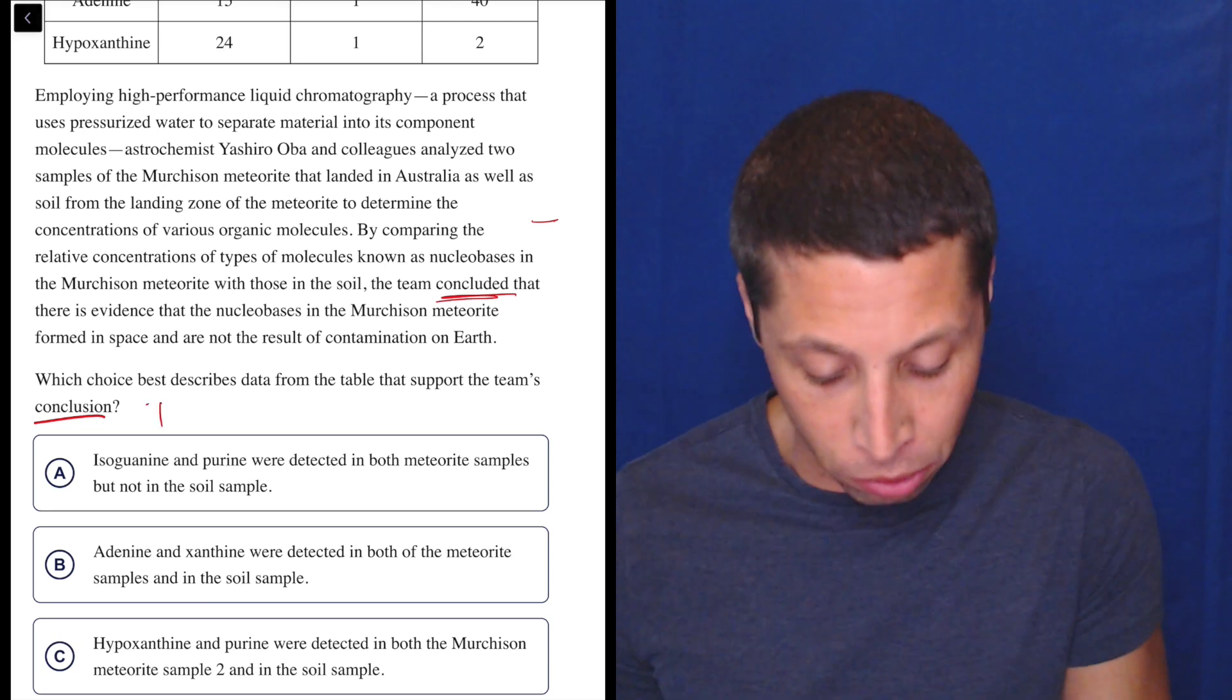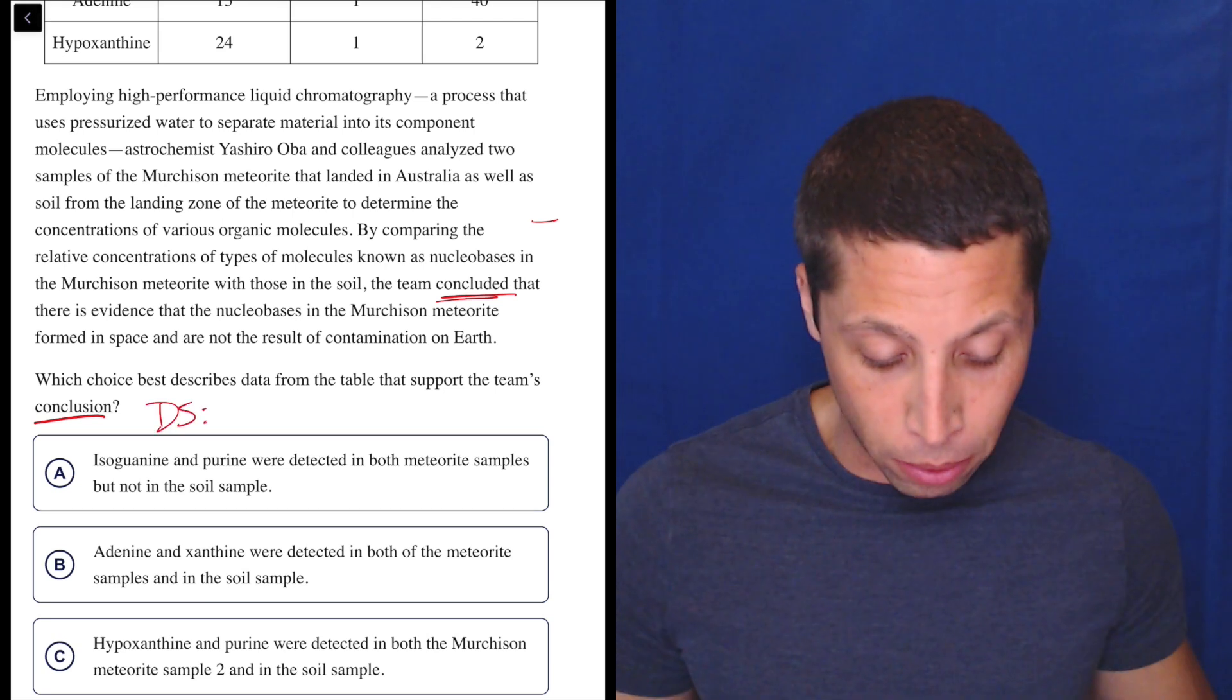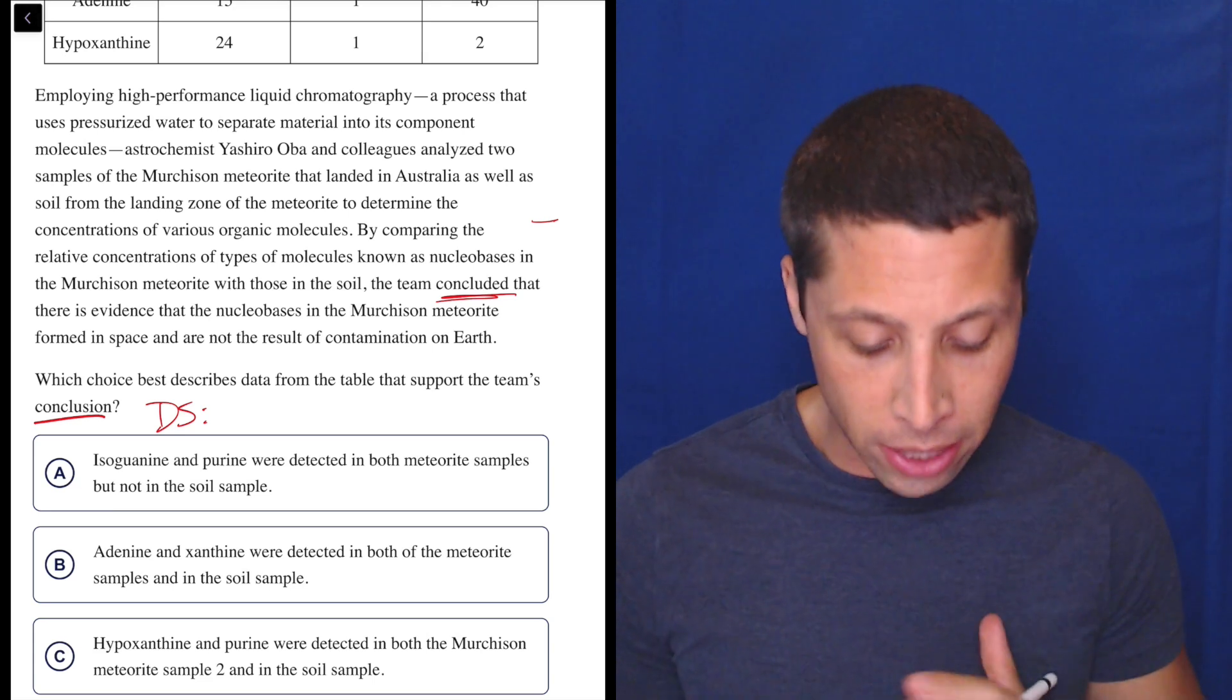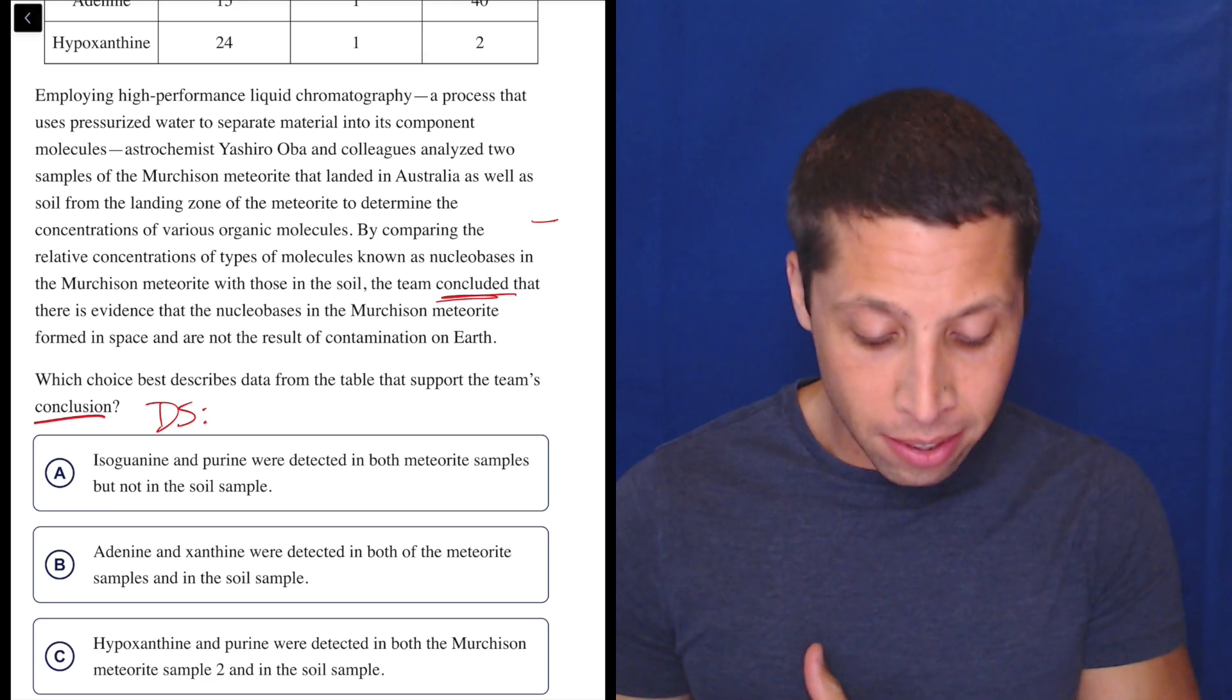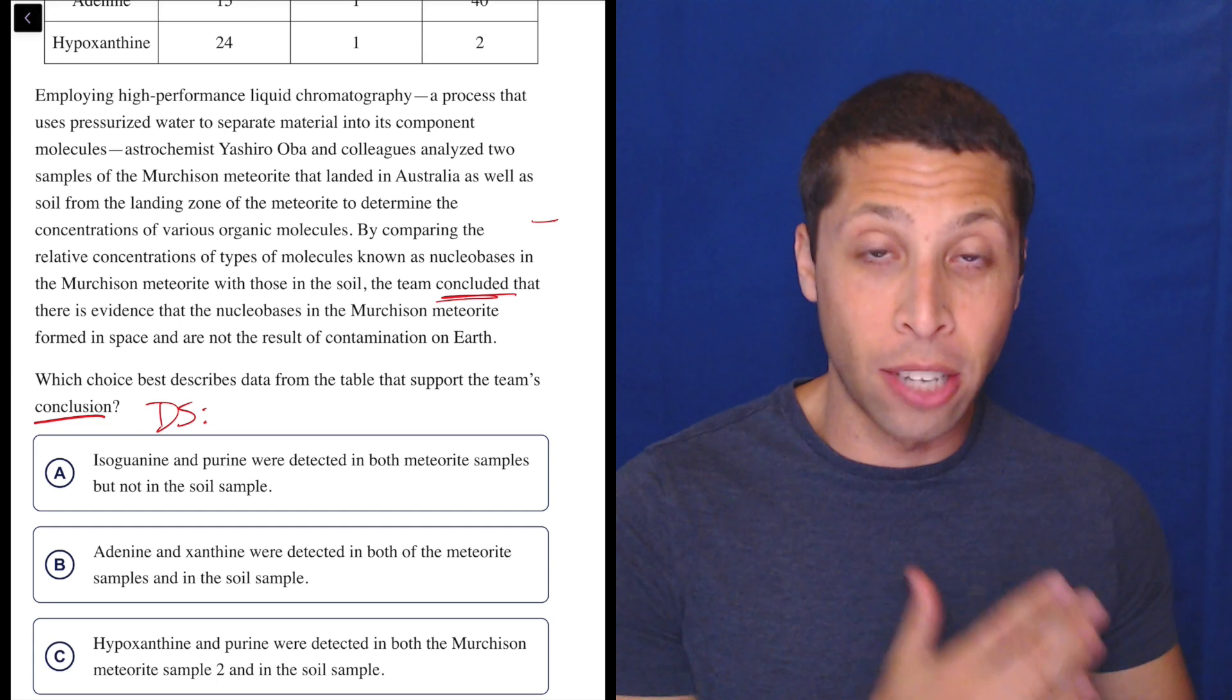This is a great example of how a dumb summary is going to help us. I want to turn that into something simple. The team concluded that there's evidence that the meteorite formed in space and is not the result of contamination on Earth.